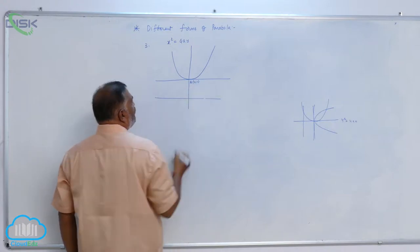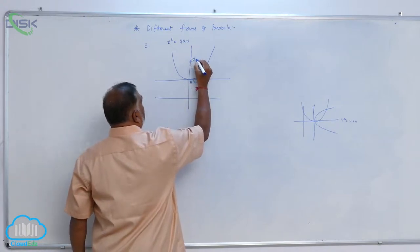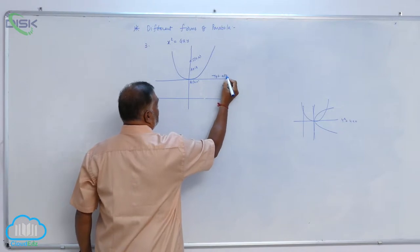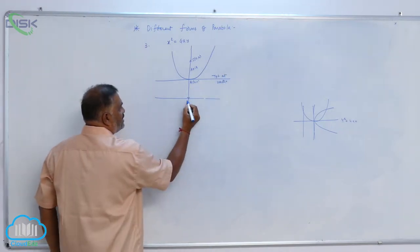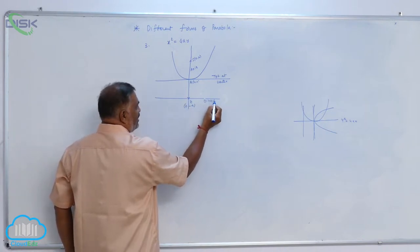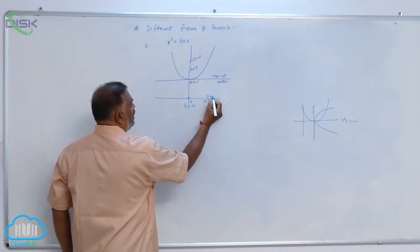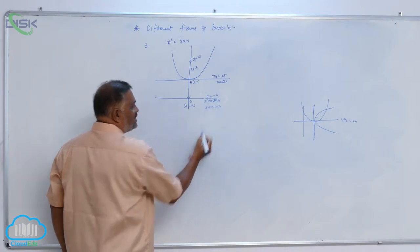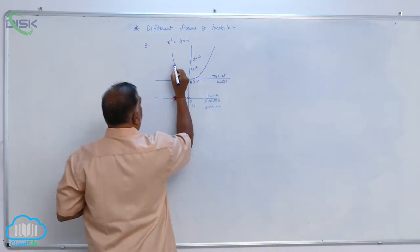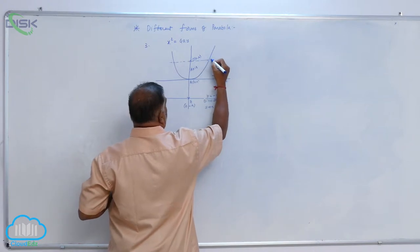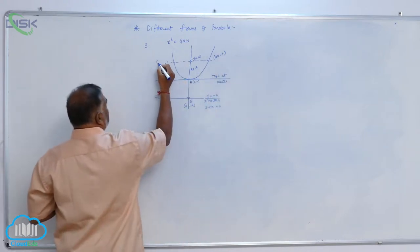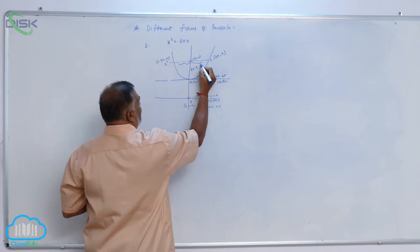The vertex is at A(0, 0). The focus S is at (0, a). The axis and the tangent at vertex are shown. Z is at (0, −a), which is the foot of the directrix. The directrix is y = −a, or y + a = 0. The ends of the latus rectum are L at (2a, a) and L' at (−2a, a), so the length of the latus rectum is 4a.